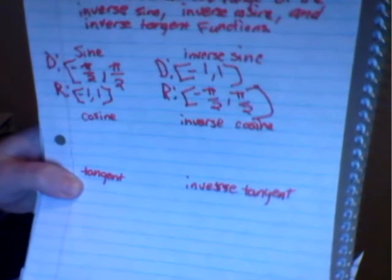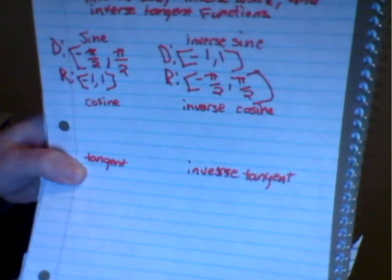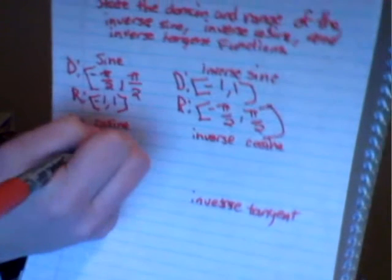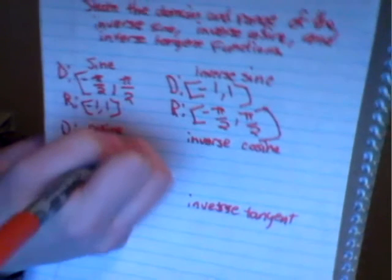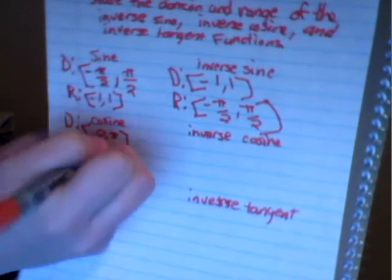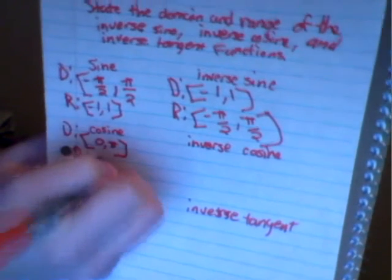Next, for the cosine, it also doesn't pass the horizontal line test, so we have to restrict the domain and the range. The domain for the cosine is 0 to pi, and the range for cosine is going to be negative 1 to 1.